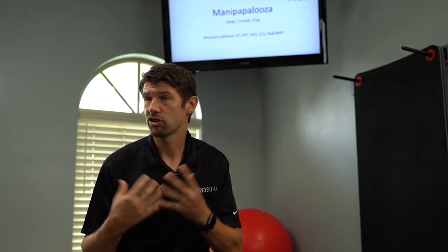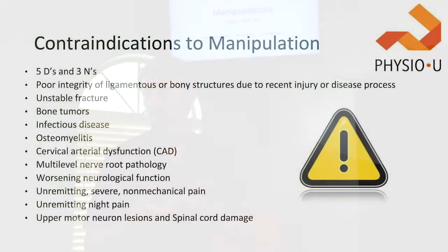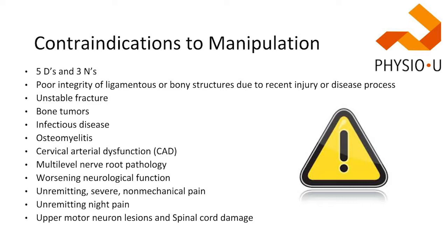If we think about the cervical spine, which is the one that has the most red flags and caution behind it, you want to know about your D's and your N's. Think about your five D's and three N's — nystagmus, diplopia, double vision, drop attacks. Ask about that with patients. Think about some of the common ones that might make somebody unstable: ligament instability, fractures, people who've taken a lot of steroids — chronic asthma — or a risk for fracture such as osteoporosis. Those are contraindications I'd want to worry about.